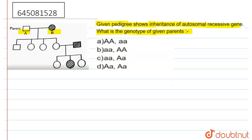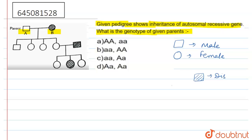This one is parent A and this one is parent B. Always remember: this symbol is for a male parent and this symbol is for a female parent. If the male parent is having the disease, we mark it like this — so this is a diseased male. If the marking is like this one, we can say this is a diseased female.